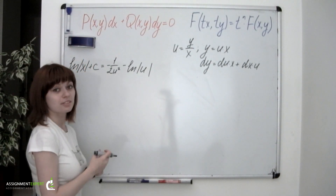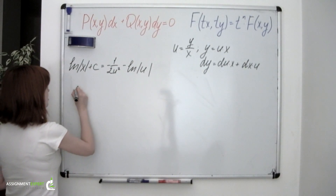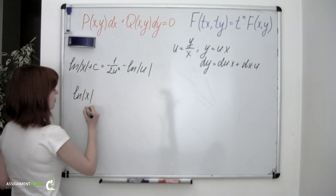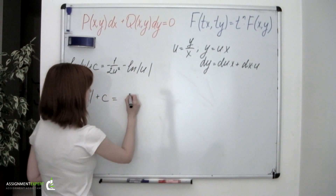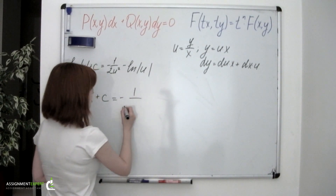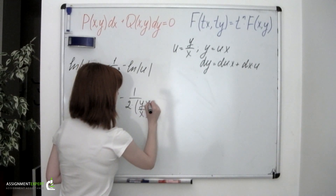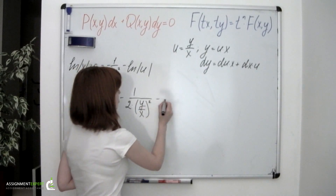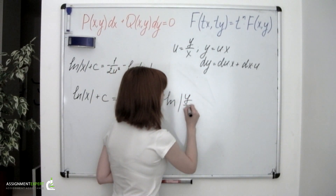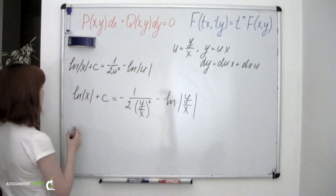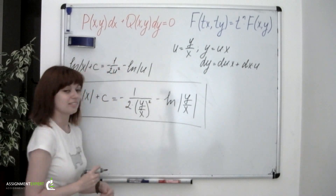The final Step 5 is to return to the y variable. So the answer is: ln of the absolute value of x plus the constant equals negative 1 over 2 times y over x, squared, minus ln of the absolute value of y over x. And that's it. Thank you very much.